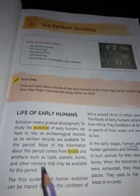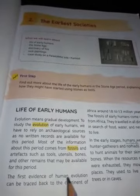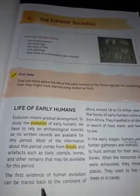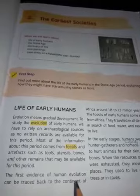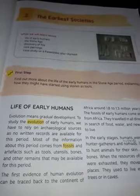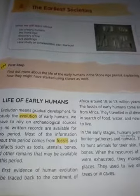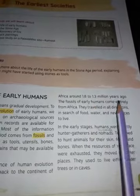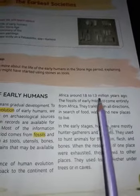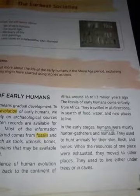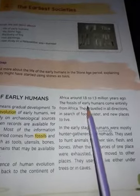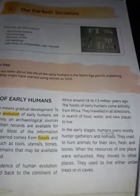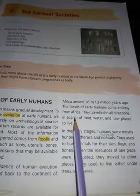The first evidence of human evolution can be traced back to the continent of Africa. Joh pehla proof hai evolution ka — kaise development start hoona shuru huwa — hume Africa ke continent se pata laga, around 1.8 to 1.3 million years ago. Itne saal pehle unhein pehla proof mila tha. The fossils of early humans come entirely from Africa — woh saare mainly Africa mein found huye the.